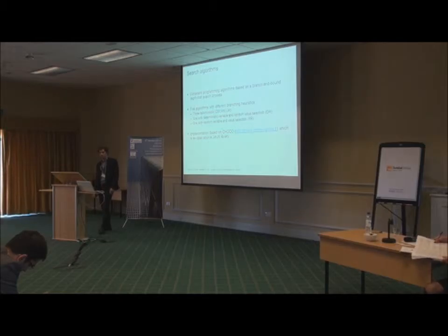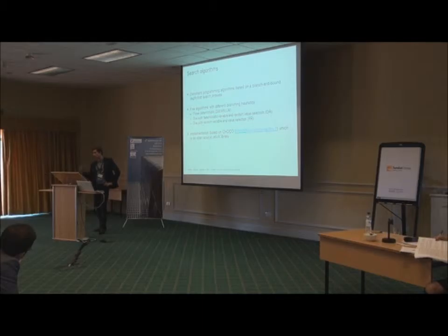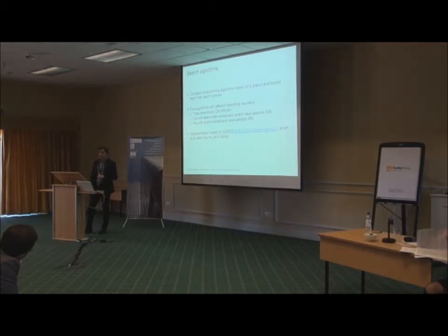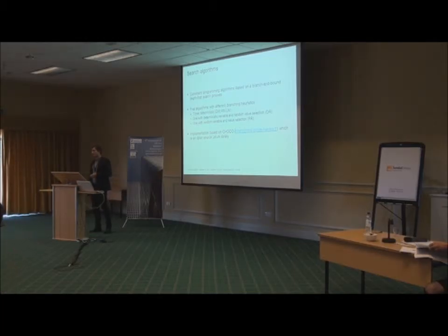To solve the problem, we studied five different algorithms. They're based on constraint programming and branch and bound. They're depth-first search processes. In this branch and bound method, you can define a branching heuristic, which means it's not a tree search. You select the variable that you're going to study next, and its next value. In these three deterministic algorithms that we studied, we have deterministic heuristics for variable and value selection. Then we studied also one algorithm with deterministic variable selection and random value selection. And then we studied also one completely randomized algorithm. These implementations are based on JaCoP, which is an open source Java library.